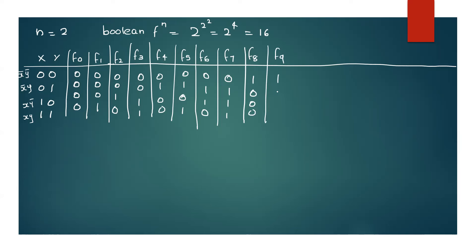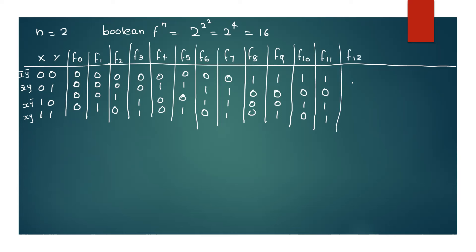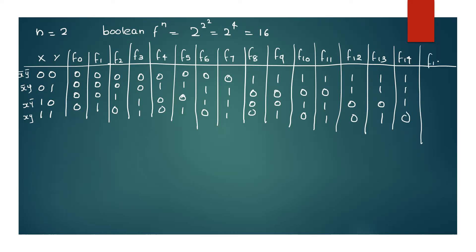Continuing the 16 functions: F9: 1,0,0,1. F10: 1,0,1,0. F11: 1,0,1,1. F12: 1,1,0,0. F13: 1,1,0,1. F14: 1,1,1,0. F15: 1,1,1,1. Now we have all 16 functions with their corresponding combinations.